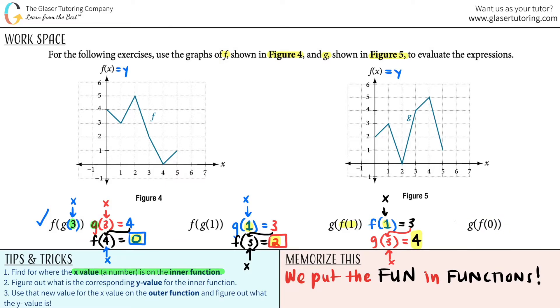Last one. f of 0. Do the inner function first. I got to look on this graph because it's an f. 0 is the x. Go all the way up to where it hits the graph. Boom. So the y value would be 4. Now go to the outer function, g. What's this number? The answer to what it was before. And now this is your new x value. g functions are here. 4 on the x. Go all the way up. Hit that graph over here. What's the answer? 5. And there you go.